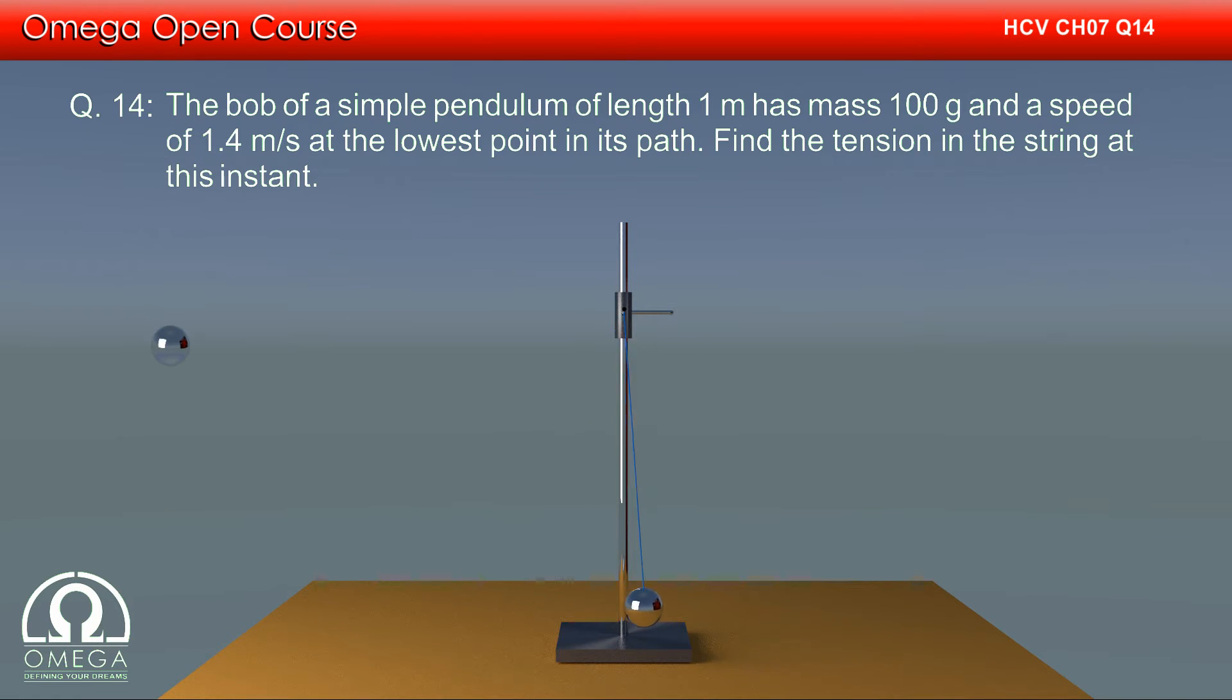Let us first draw the free body diagram of the bob in the frame rotating with the bob at the instant it is at the lowest point in its path.